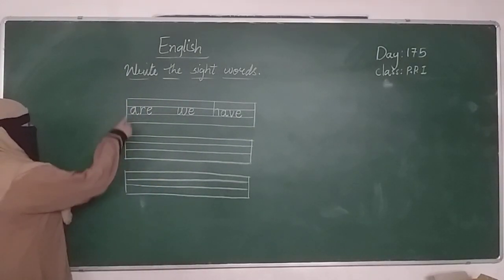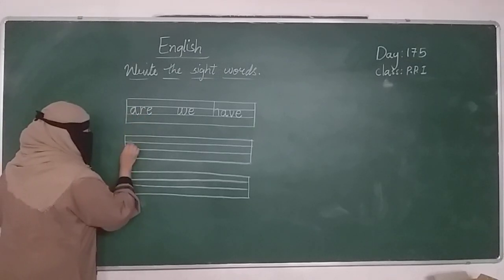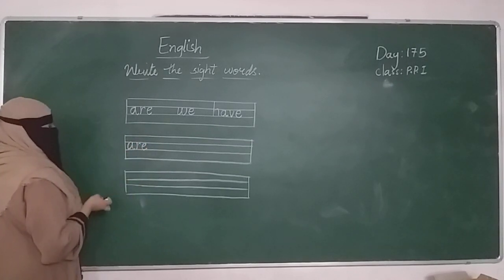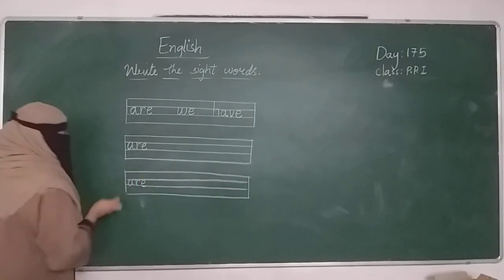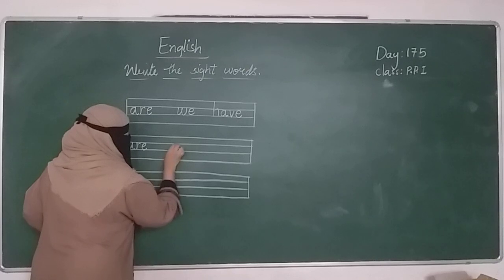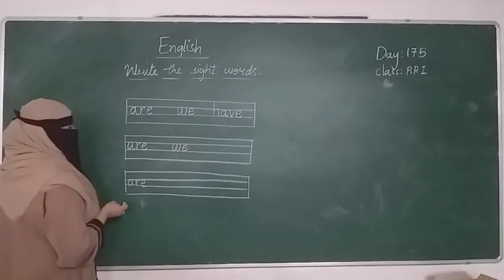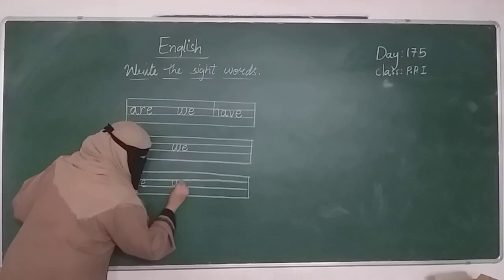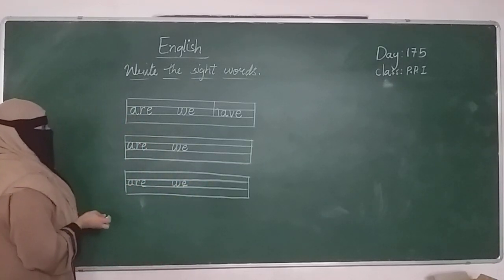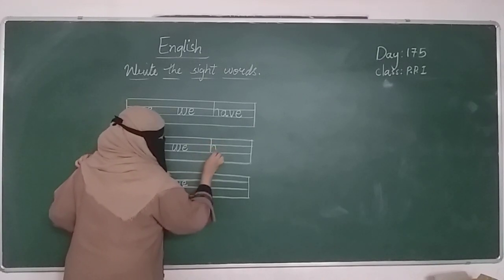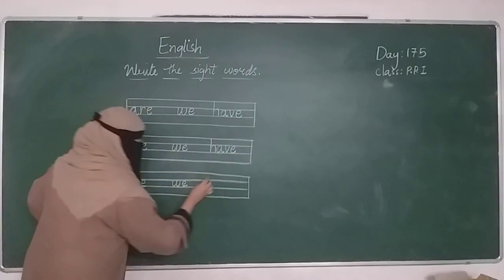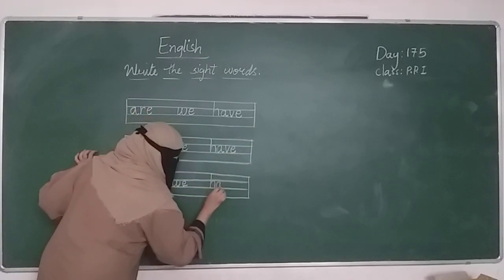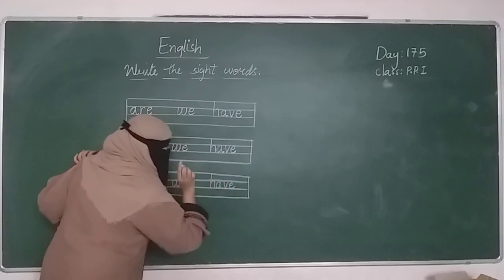Once again write these three letters. The teacher repeats the spelling multiple times: A, R, E - are. W, E. H, A, V, E - have.